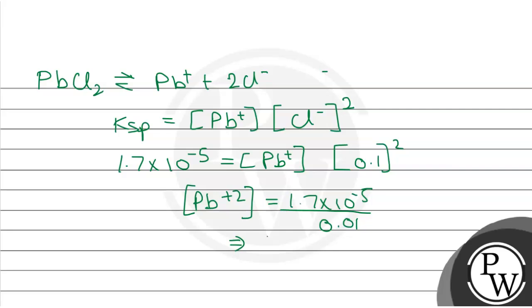Now, after calculating this, we will get 1.7 × 10^-3 M. So this is our answer - the concentration of Pb2+.